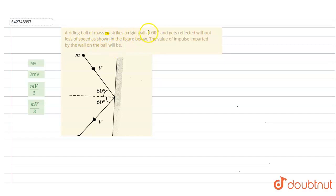strikes a rigid wall at 60 degrees and gets reflected without the loss of speed, as shown in the figure below. The value of impulse imparted by the wall on the ball will be